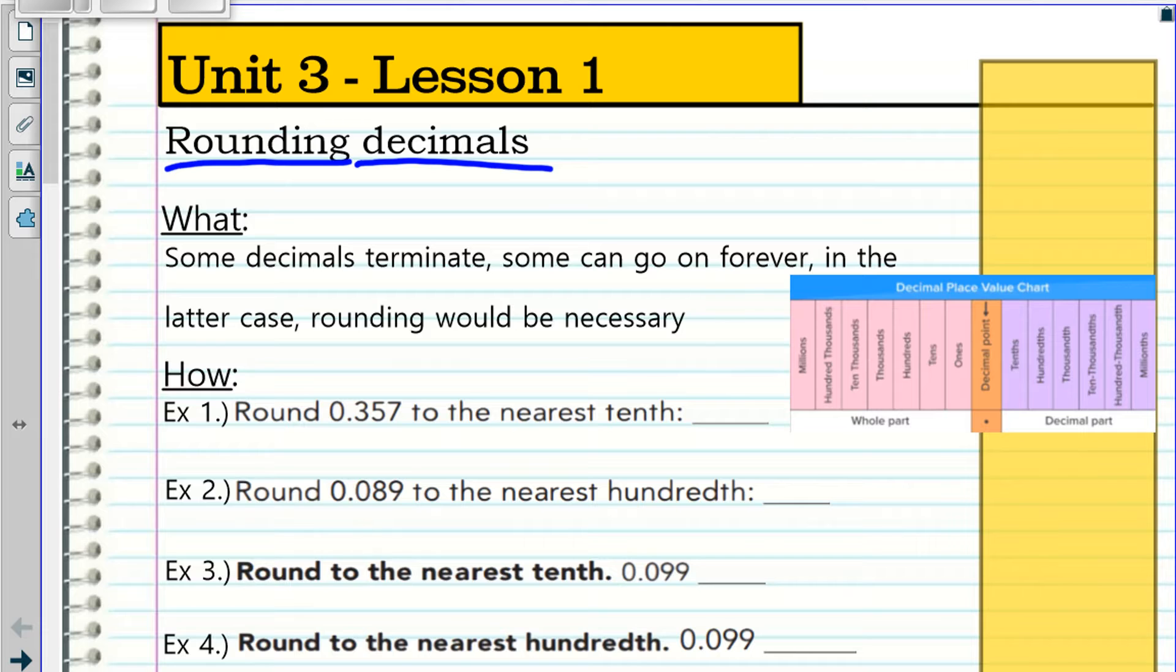What is this lesson about? Some decimals terminate. Terminate means ending. For example, a terminating decimal would be like 0.2, that terminates. 0.22, that terminates. 0.437, that terminates. And then you got something that goes on forever. You will see that when you do long division or converting from fractions to decimals.